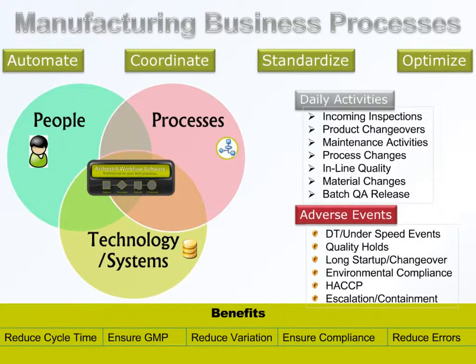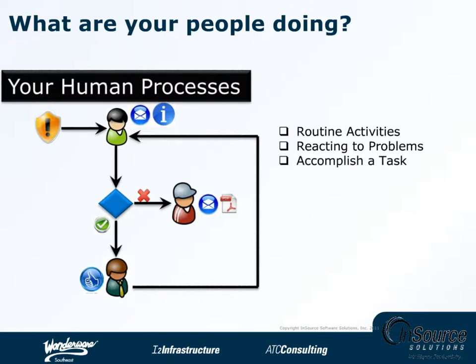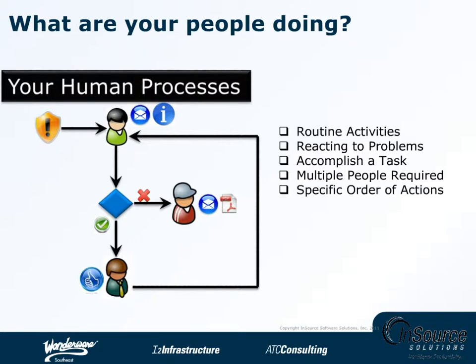If you think about it, your people are involved in a myriad of activities on a daily basis and every step each person takes impacts the bottom line of the enterprise. They are either involved in routine things like an incoming material inspection, or they are reacting to problems like a quality issue or a compliance situation. Often in these situations, it takes multiple people working in a coordinated fashion to accomplish the task at hand, and in a timely manner is often a requirement.